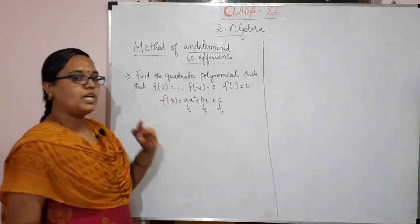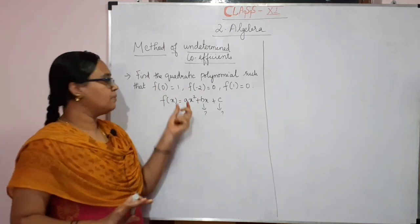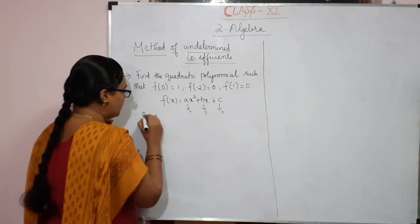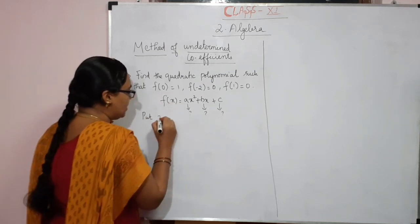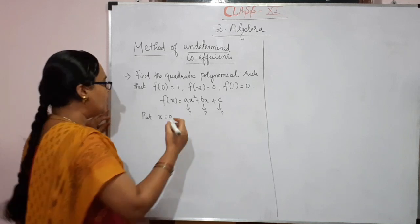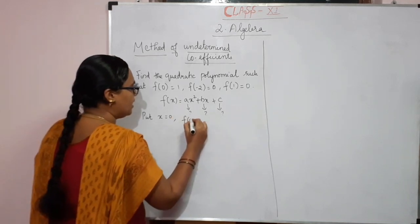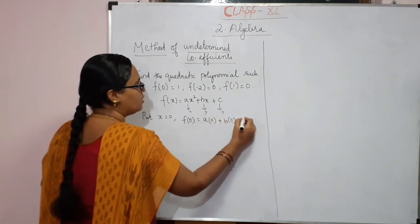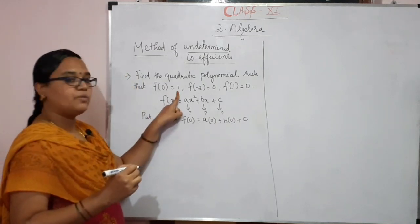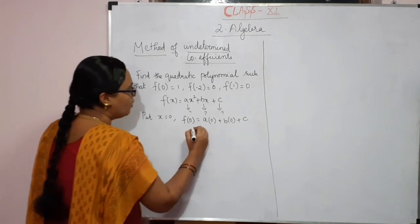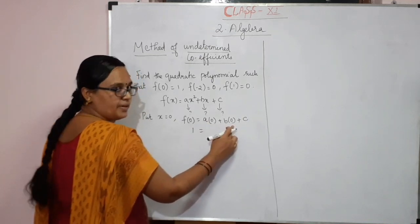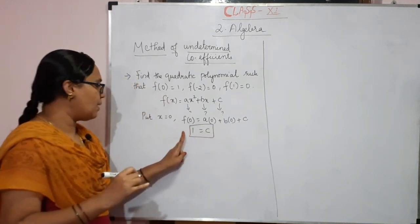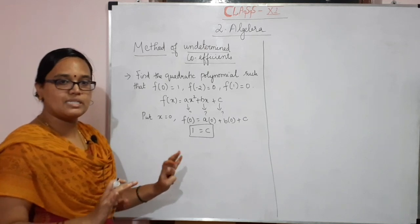Now, what do we do? Put f(0) = 1. Substitute x = 0 into the equation: f(0) = a(0) + b(0) + c. Since 0 times anything is 0, we get c = 1.